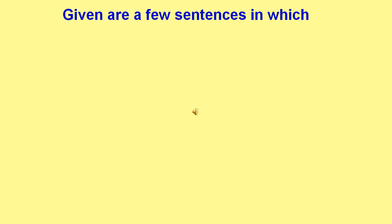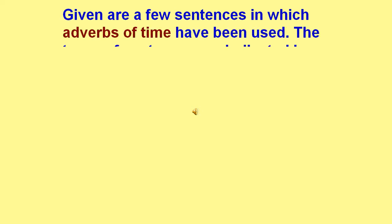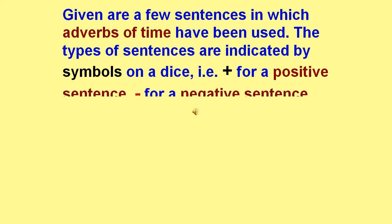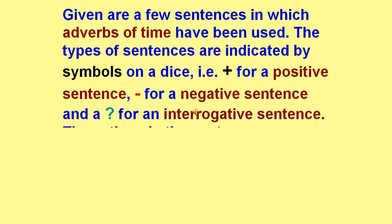Given are a few sentences in which adverbs of time have been used. The types of sentences are indicated by the symbols on a dice. That is, plus for a positive sentence, minus for a negative sentence and a question mark for an interrogative sentence.